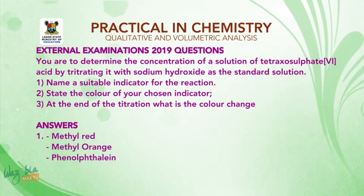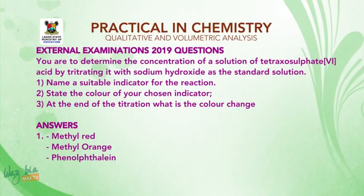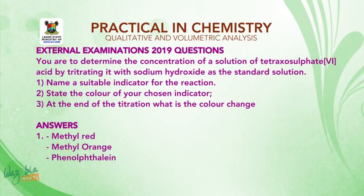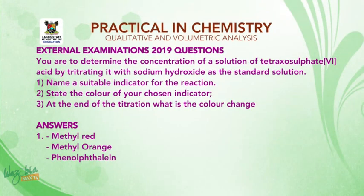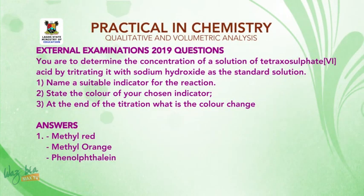As a result, the question asks: name a suitable indicator for the reaction. The second question is: state the color of your chosen indicator. The third question is: at the end of the titration, what is the color change? We are looking at sodium hydroxide and tetraoxosulfate(VI) acid — a strong acid and a strong base. Six marks are awarded according to the marking guide.